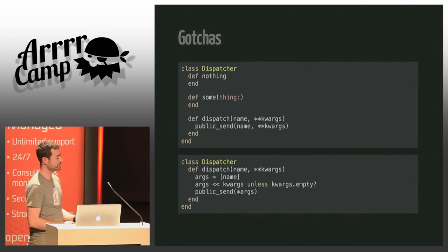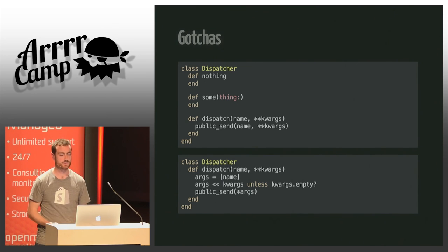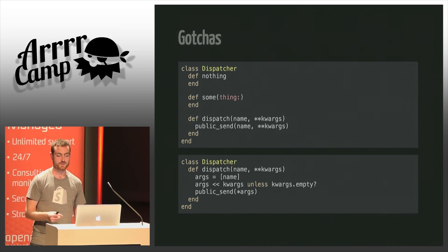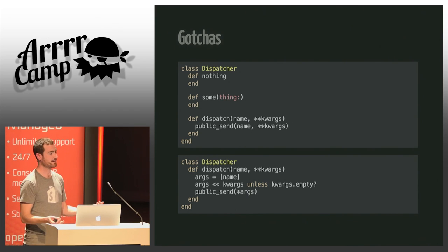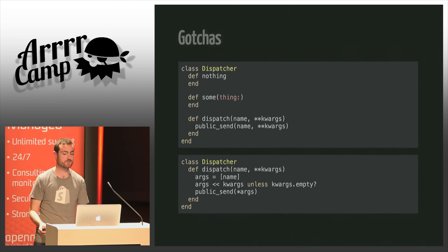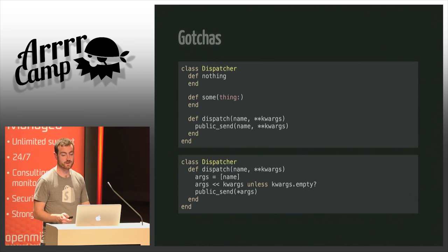To conclude: most of our troubles with keyword arguments were solved by Matz and the Ruby core team over the years. It looks like this is something that could also be fixed in the semantics of a message send — we could say if the keyword arguments hash is empty, don't push it depending on the arity. Or it could be pushed down into the VM and we wouldn't have to care about it. I expect it to be solved in one way or another in the future.